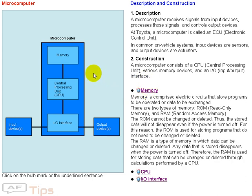Memory is comprised of electric circuits that store programs to be operated or data to be exchanged. There are two types of memory: ROM and RAM. The ROM cannot be changed or deleted. Thus, the stored data will not disappear even if the power is turned off. For this reason, the ROM is used for storing programs that do not need to be changed or deleted.